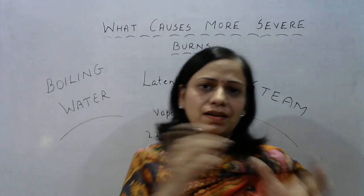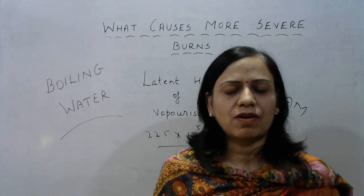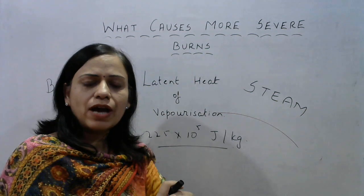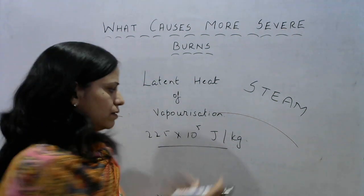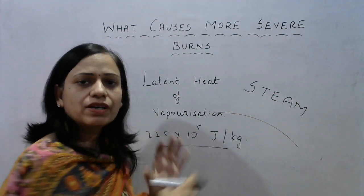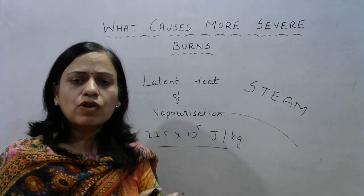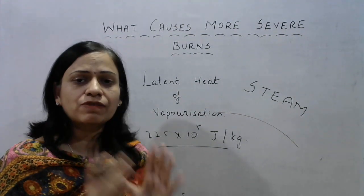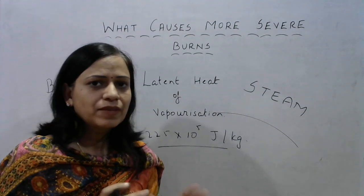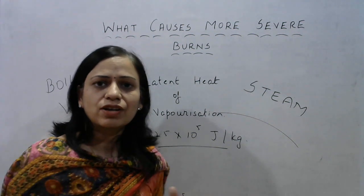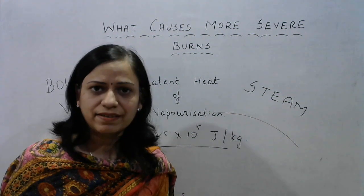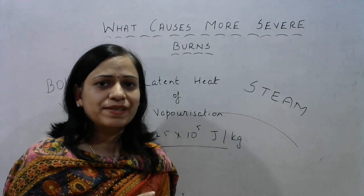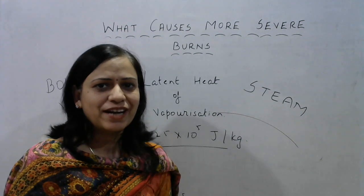When steam comes in contact with our skin — say your hand — it condenses back, and the same amount of energy that it had earlier absorbed is given out, which causes a more severe burn compared to boiling water at the same temperature. Boiling water falling on your skin will not give off this heat because it has not absorbed this heat earlier and is already in the liquid state. That is why steam causes more severe burns than boiling water at the same temperature.